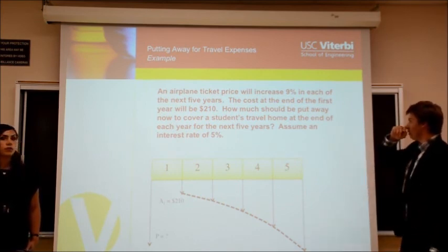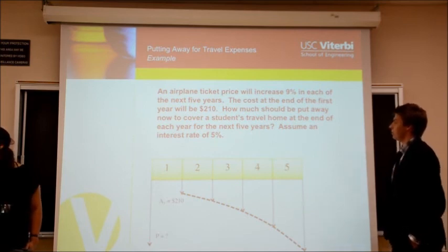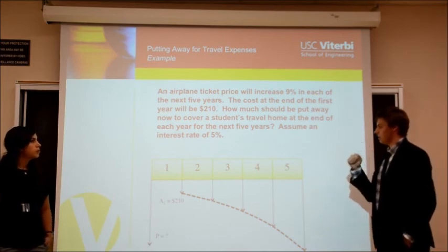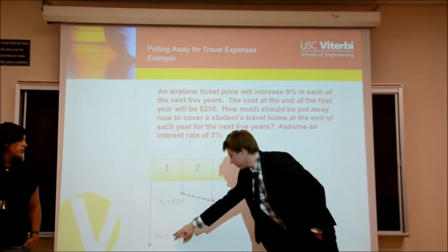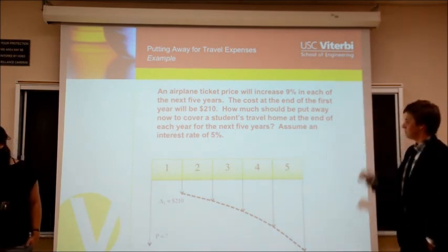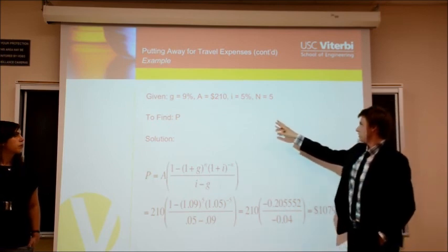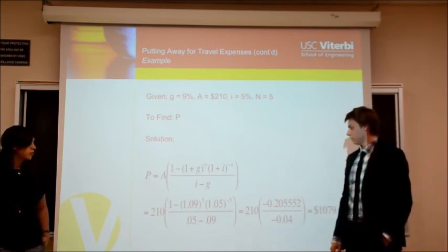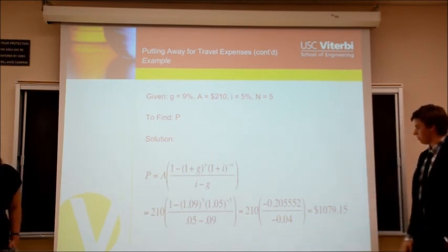We have an example of putting away for travel expenses. An airplane ticket price will increase 9% in each of the next five years. The cost at the end of the first year will be $210. How much should be put away now to cover a student's travel home at the end of each year for the next five years, assuming an interest rate of 5%? If we depict a cash flow diagram, we're looking for the present amount. We're given an initial annuity of $210 over five years. We have a growth rate of 9%, an annuity of $210, an interest rate of 5%, and number of periods is five. We use that present value equation with geometric gradient series and end up with this number. That's how much they should put away now to afford the travel.